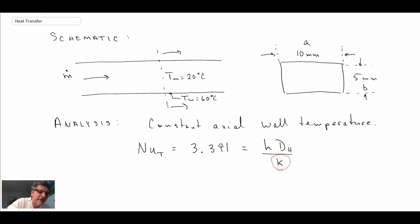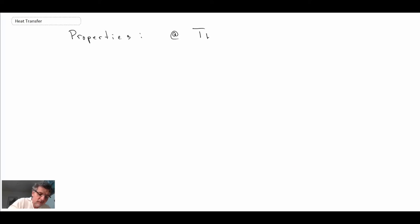What we'll do is evaluate our properties at the 20°C value. So the property that we have to look up in a table is going to be the thermal conductivity of water, doing an interpolation.